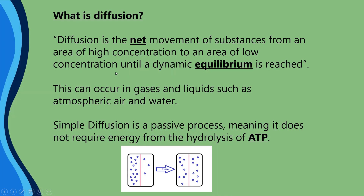So what is diffusion? Diffusion is the net movement of substances from an area of high concentration to an area of low concentration. Now what do we mean by net? Net means the amount that moves across after we take losses into account. If we look at the diagram at the bottom, we can see that molecules are going to be bouncing across this line in the middle. This pink line here represents the phospholipid bilayer, aka the cell membrane.